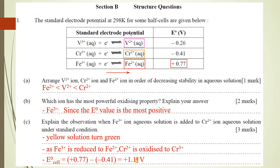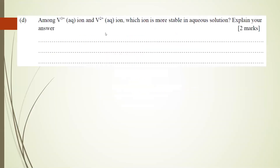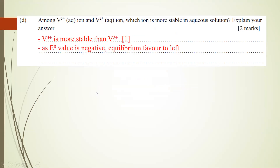Part D: which ion is more stable — V3+ or V2+? Since the E0 value is negative, this means V3+ is more stable than V2+. Because the E0 value is more negative, the equilibrium favors more to the left, keeping V3+ intact. So V3+ is more stable.